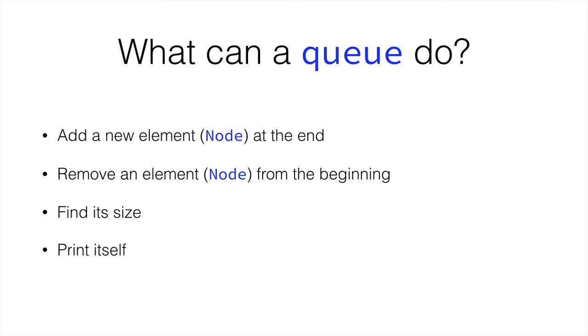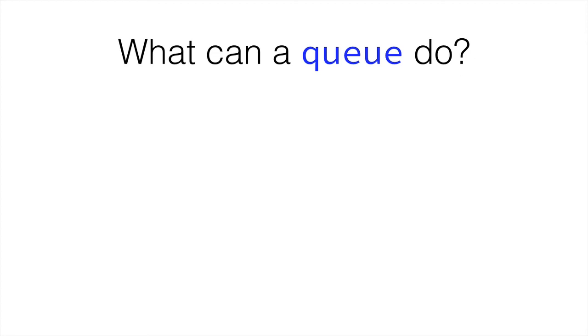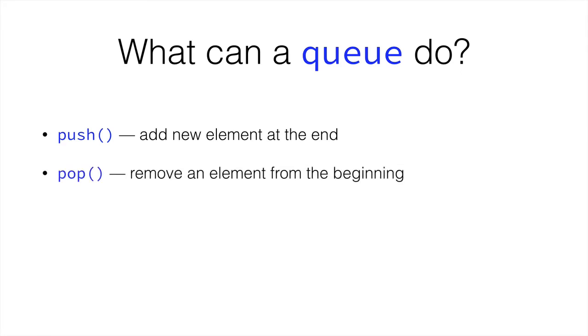So we have the push method—it's going to add a new element at the end. Pop is going to remove an element from the beginning. Size is going to get its size, and print is going to print the queue.